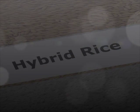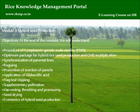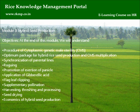Hybrid Rice, Module 3: Hybrid Seed Production. Objectives: At the end of this module, we will understand the procedure of Cytoplasmic Genetic Male Sterility (CMS), the optimum package for hybrid rice seed production, CMS multiplication, synchronization of parental lines, roguing, promotion of exertion of panicle, application of gibberellic acid, flag leaf clipping, supplementary pollination, harvesting, threshing and processing, seed drying, and economics of hybrid seed production.